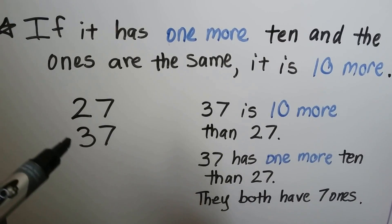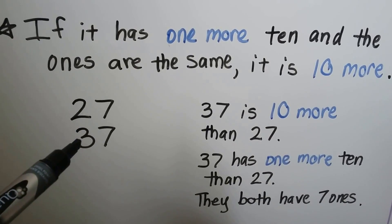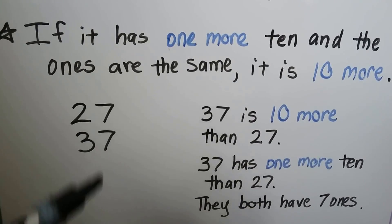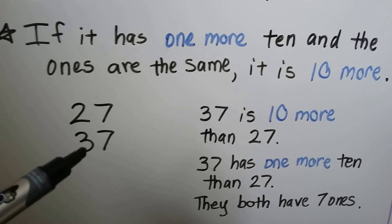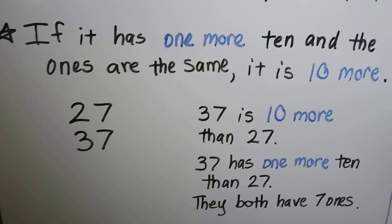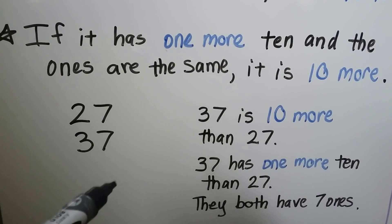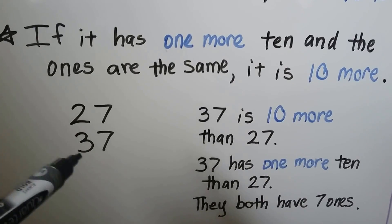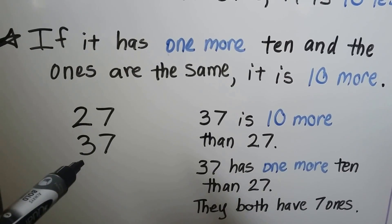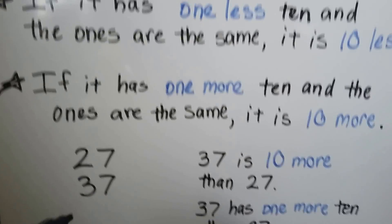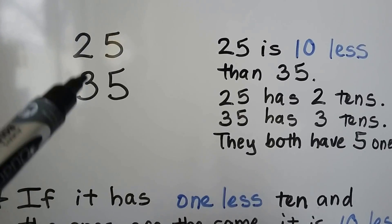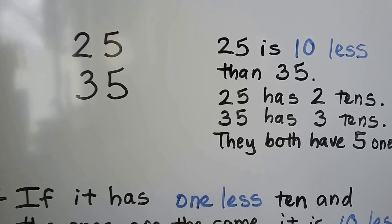Here we have 27 and 37. 37 is 10 more than 27. It has 1 more 10 than 27. They both have 7 ones. The only thing that changed is the tens place and it has 1 more. We can even look at this one as: 35 is 10 more than 25.